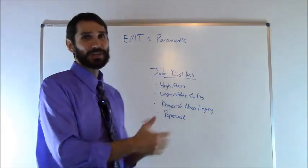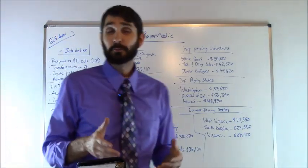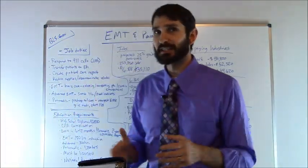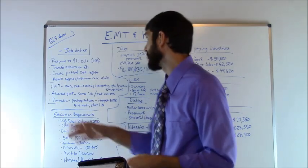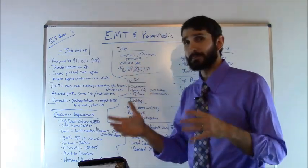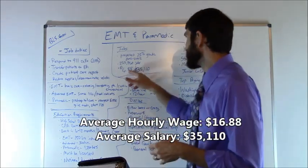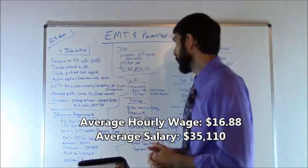Now let's talk about salary statistics. According to the Bureau of Labor Statistics, which is the government agency that compiles and records jobs data, as of 2014 the average hourly income for an EMT or paramedic was $16.88 per hour, and the average salary was $35,110.